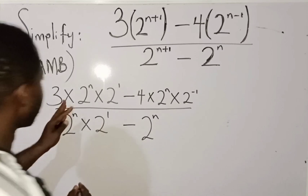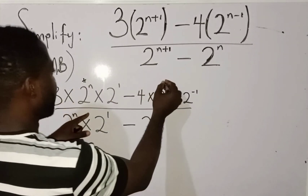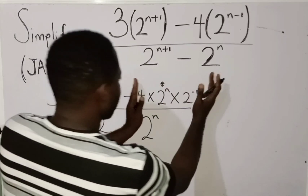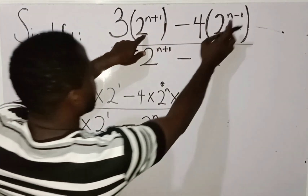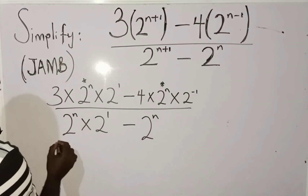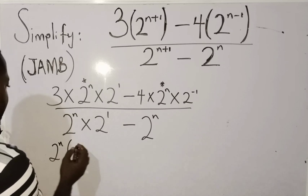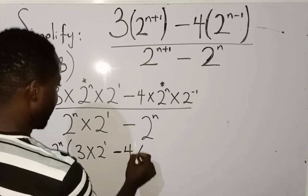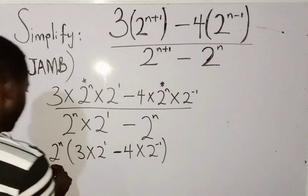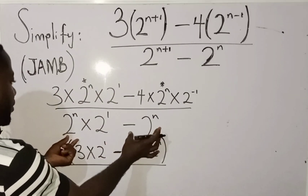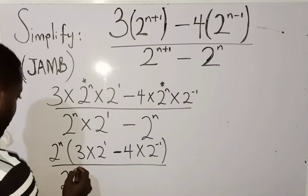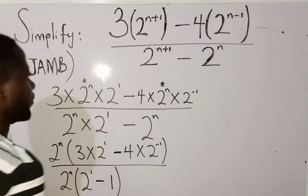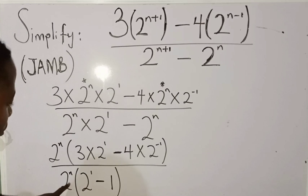That is the first step. For the second step, we are going to factorize. I am going to factor out 2 raised to power n. You can see that 2 raised to power n is common at both sides — it is here on this side and also on that side. So I am going to bring it out: 2 raised to power n. In the brackets, I am going to have 3 multiplied by 2 raised to power 1 minus 4 multiplied by 2 raised to power minus 1. That is for the numerator. For the denominator, 2 raised to power n is also common, so I bring it out, and inside we have 2 raised to power 1 minus 1.